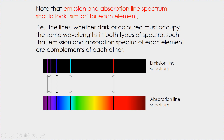So for example, in the emission line spectra, if a red line appears at a certain position, correspondingly the dark line where the red is supposed to be will appear as a dark line. So in that sense, the emission line spectra and absorption line spectra are negative images of each other.